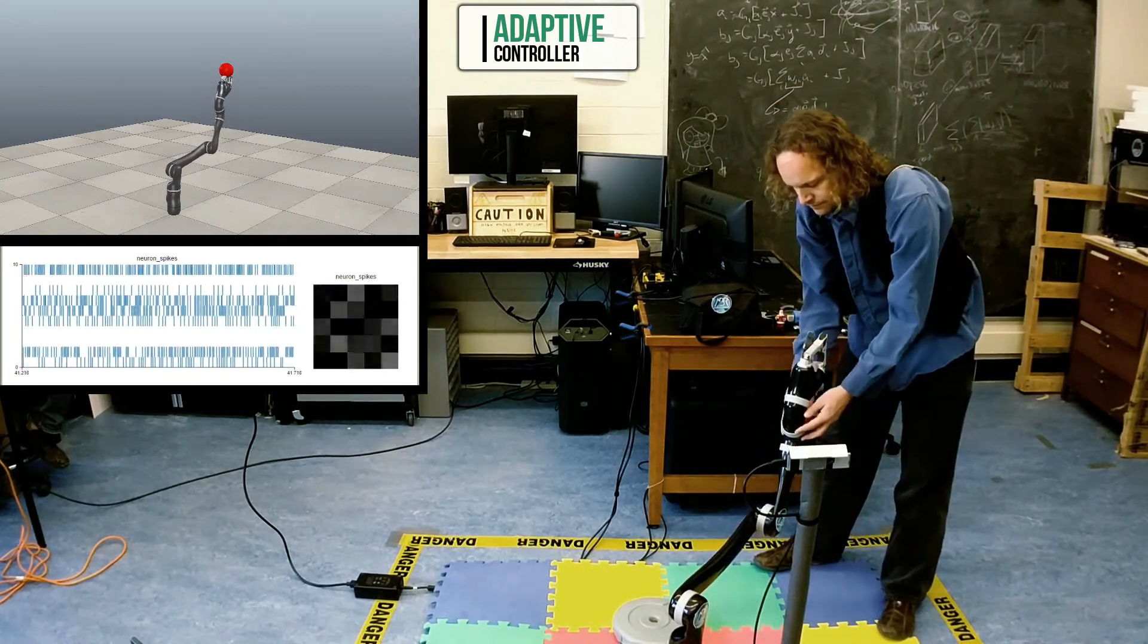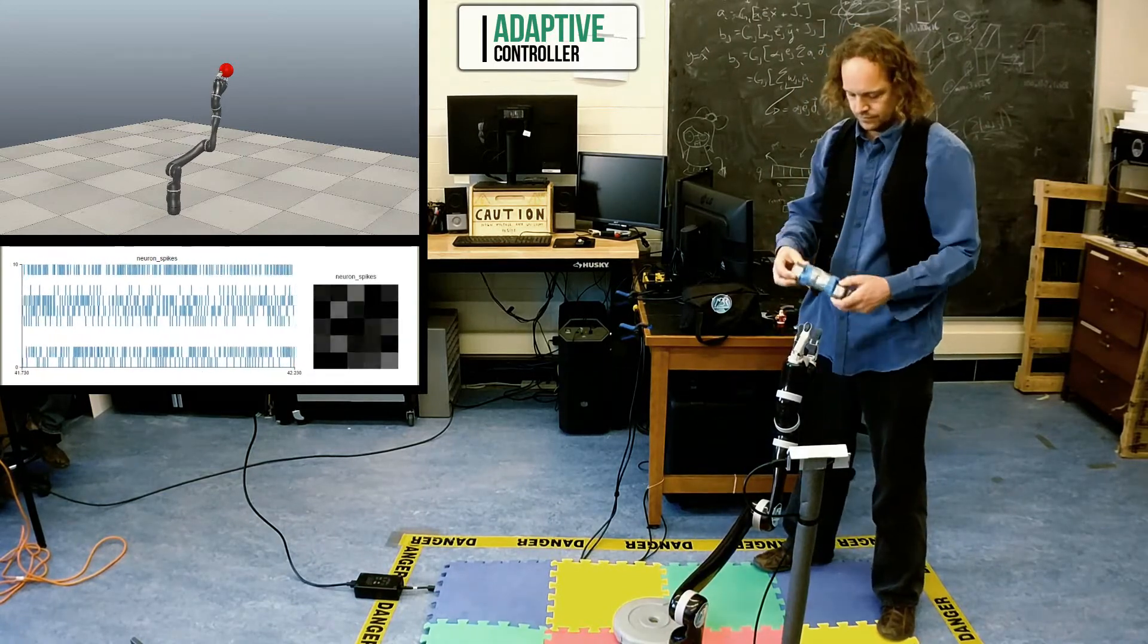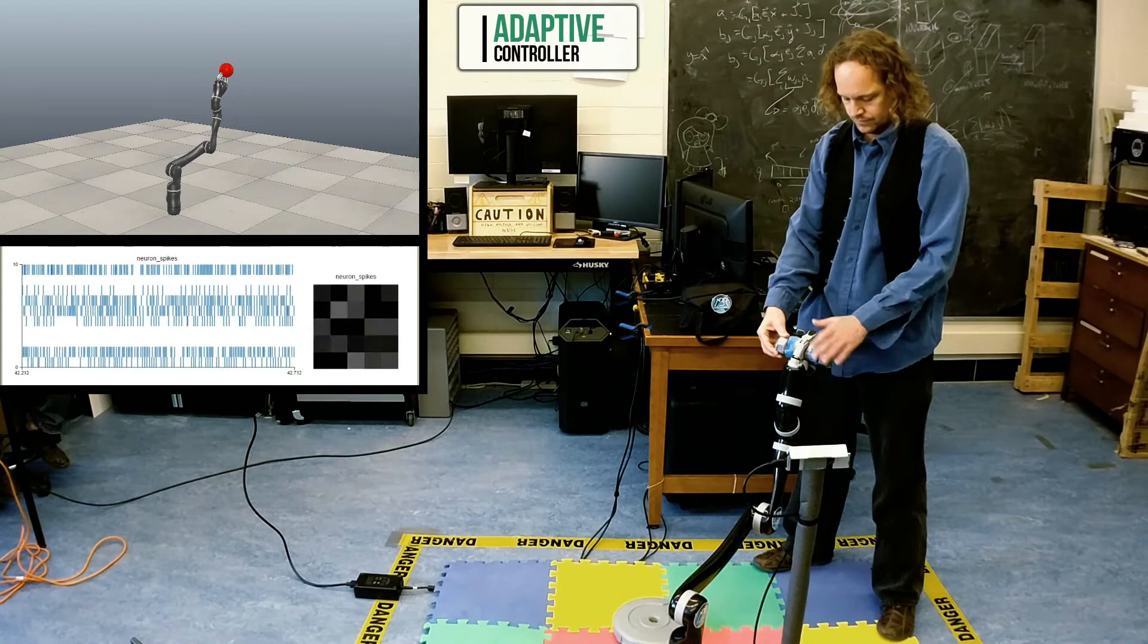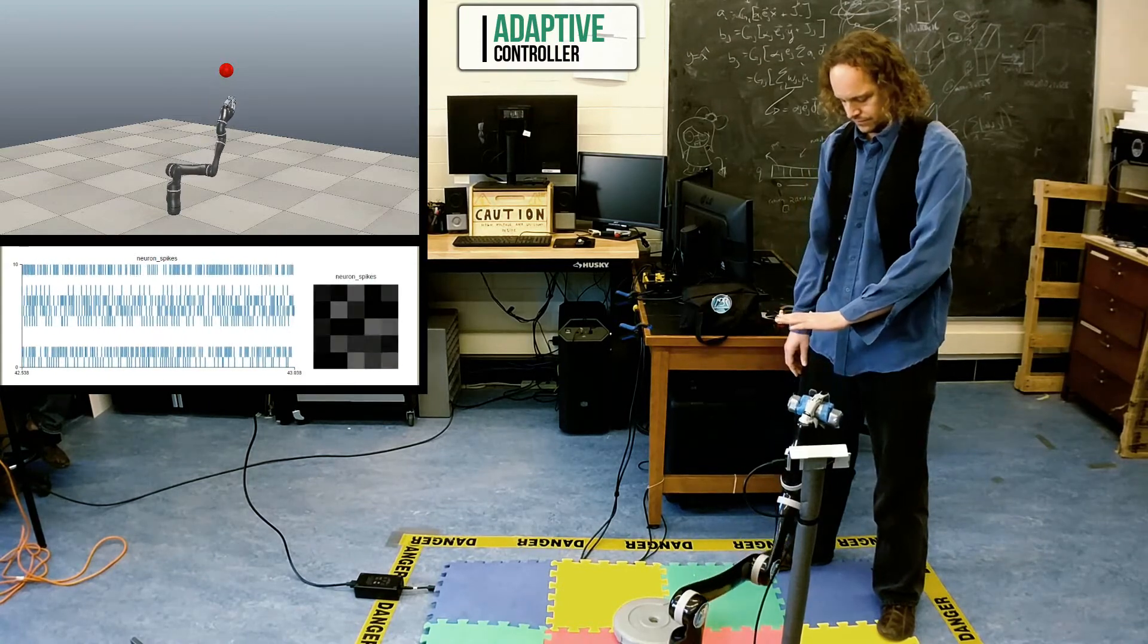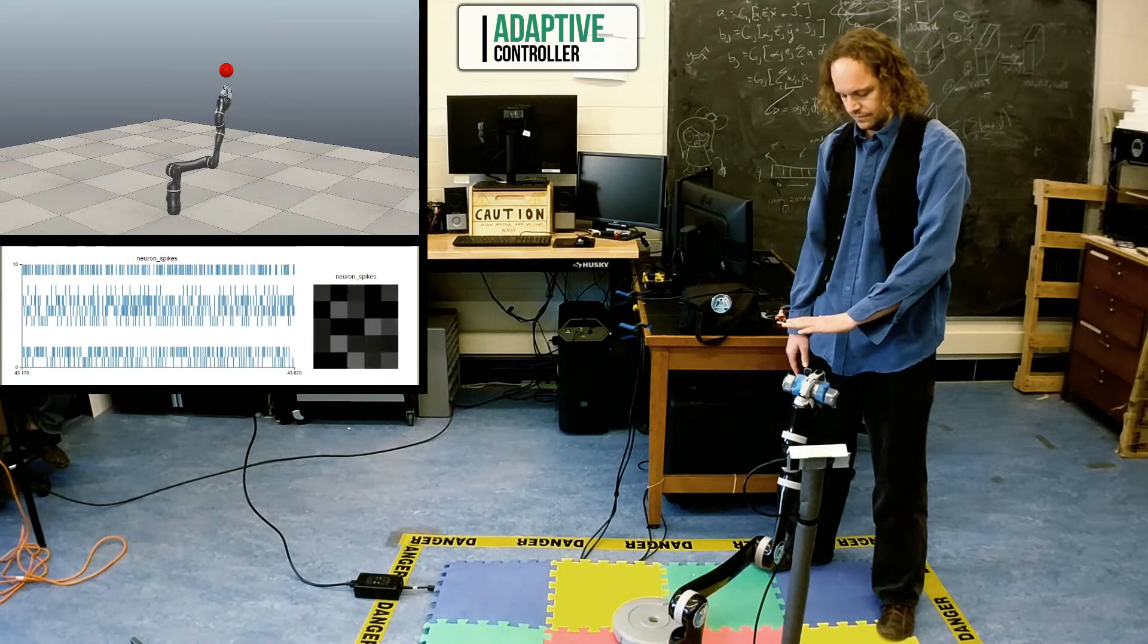However, the difference becomes clear when the two pound weight is reintroduced. The error in the adaptive controller is smaller, and more importantly, you can see it learning about this new force. It slowly moves itself back to the target location. Notice the neural activity on this screen.